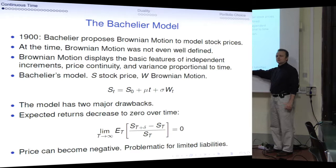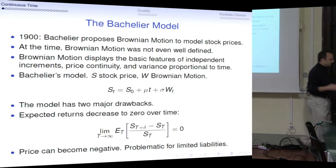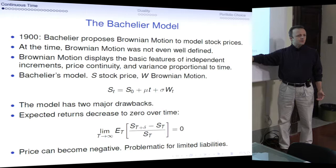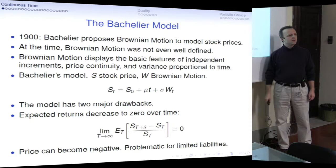The second problem, which is theoretically even bigger but in practice less important, is that the price under the Bachelier model can become negative. This is against the law because limited liabilities imply that stockholders cannot be liable for holding stocks. At most they can lose the entire investment, but their investment cannot become negative at any time.